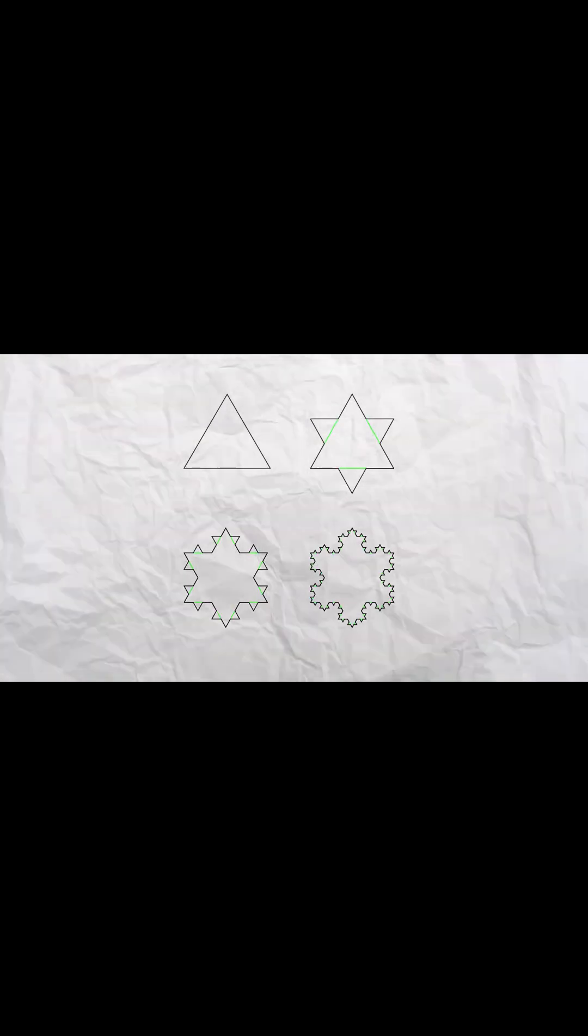When calculated, the Koch curve has a dimension of about 1.26—not one-dimensional, but not fully two-dimensional either.